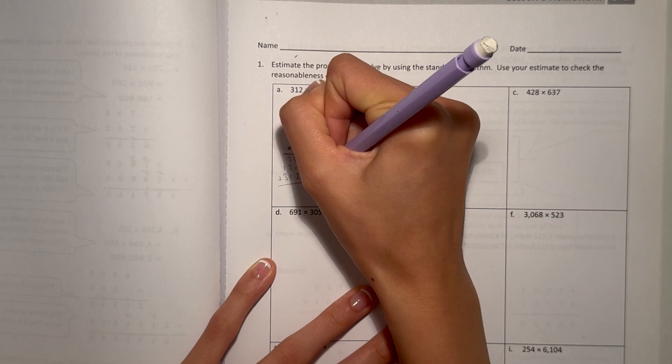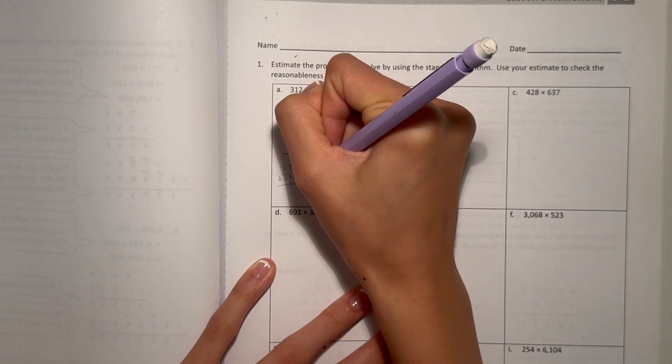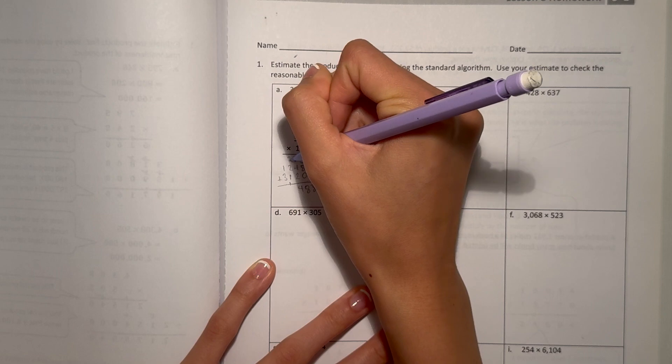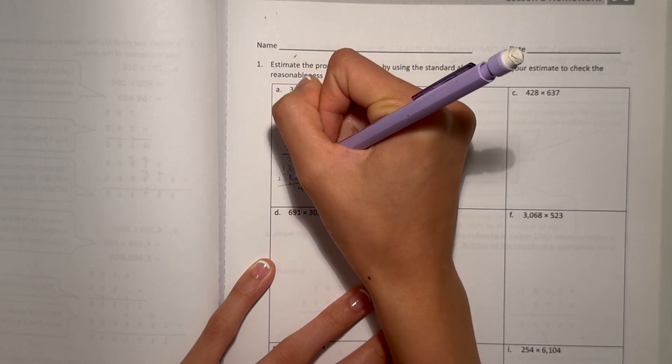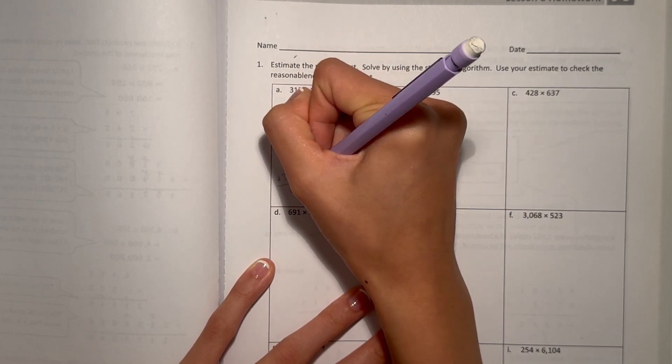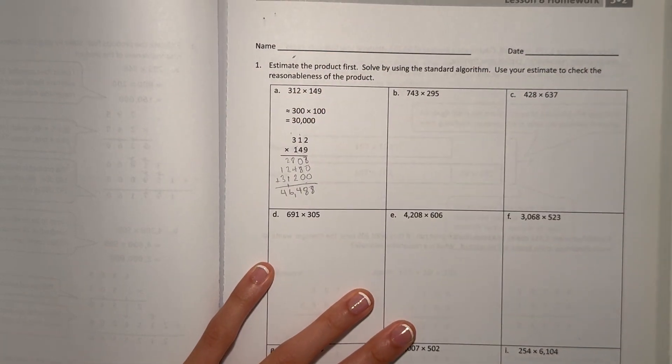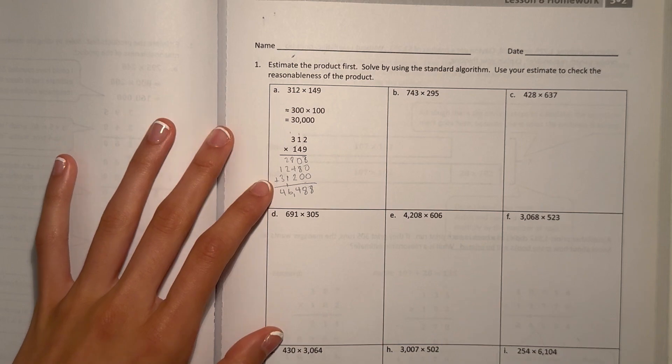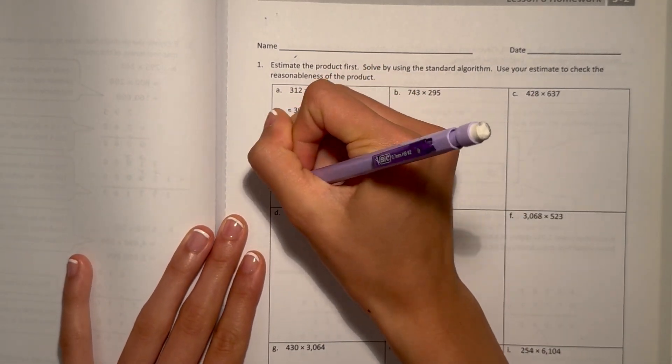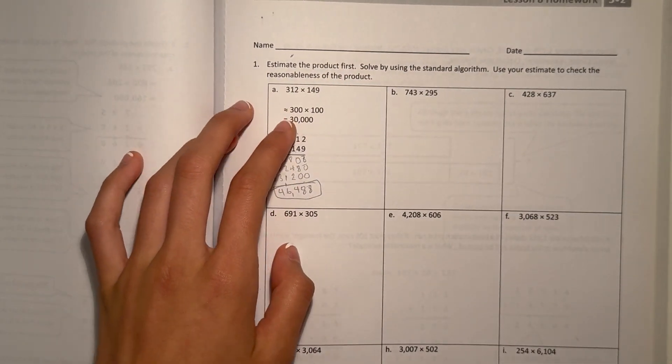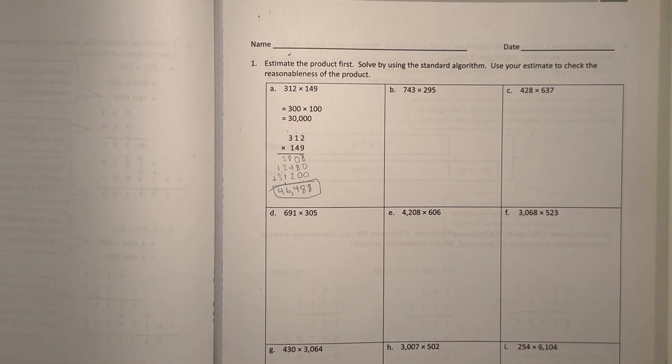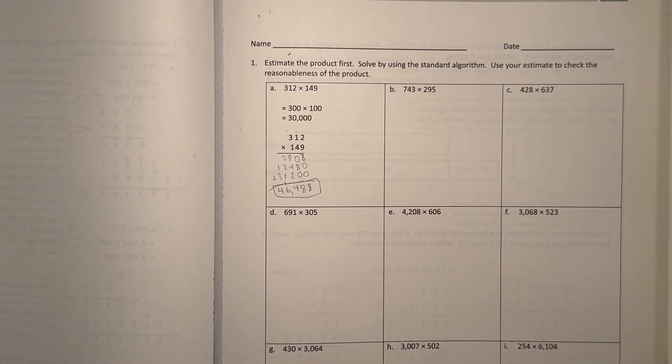1 times 2 is 2. 1 times 1 is 1. And 1 times 3 is 3. Add it all together. 8, 8, that's 6. We'll say it's 14. 2, 4, 5, 6, that's 4. So our answer is 46,488. So our answer is reasonable. Let's circle that. It's pretty close to 30,000. Like it's at least in the same place value. So it's pretty close. So our answer would be pretty reasonable.